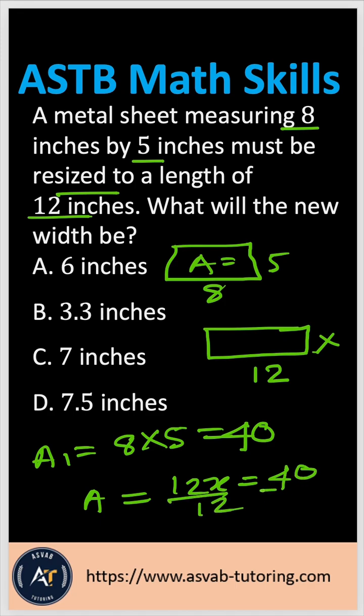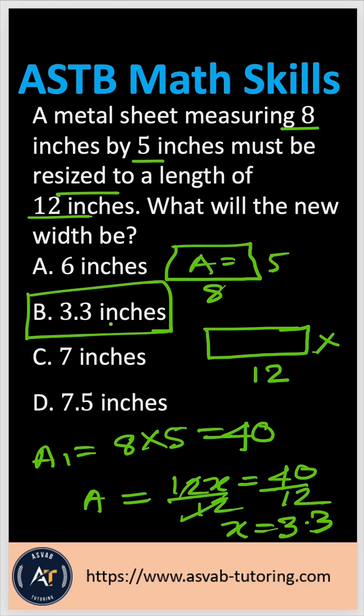Divide both sides by 12. 12 and 12 cancel out, that gives you x. If you divide 40 by 12, that gives you 3.3. So the correct answer is option B.